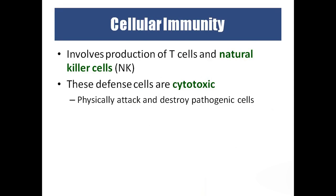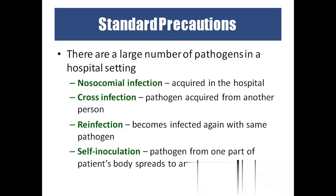T cells are natural killer cells mainly responsible for cellular-mediated immunity, which is cytotoxic in nature and physically attacks and destroys pathogenic cells. Coming to standard precautions to keep our immunity safe: nosocomial infection is an infection acquired from the hospital — for example, going to a pulmonology ward with TB patients who are not isolated increases the chance of infection. We must wear a mask and sanitize after coming out of the hospital.